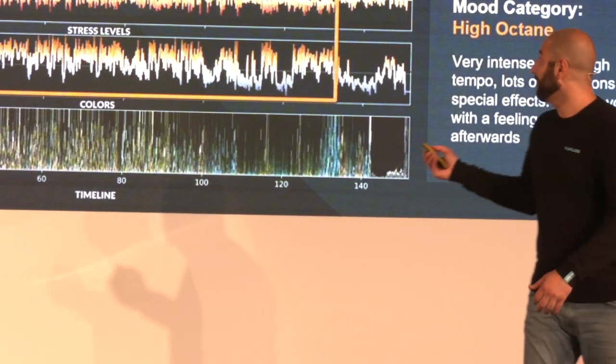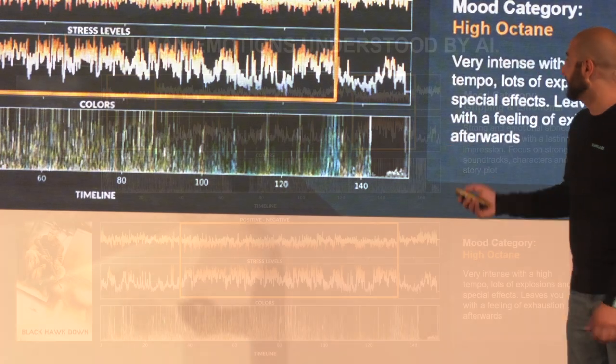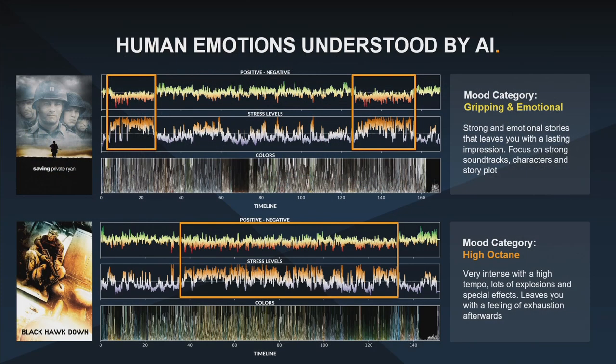Looking at the top graph, we can see Saving Private Ryan starts quite stressfully — the beach of Normandy is perceived extremely negatively. Then in the middle of the movie we have character building, where we create an emotional bond with each character. And then we have the climax at the end where all the characters we've built relationships with die.